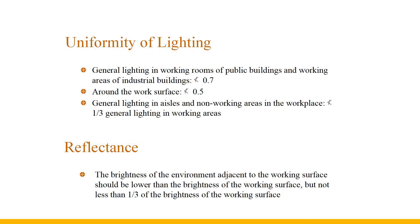Illumination uniformity is equal to the ratio of minimum illuminance to average illuminance. General lighting in working rooms of public buildings and working areas of industrial buildings should not be less than 0.7. The surrounding area of the working surface should not be less than 0.5. The general lighting illuminance value of walkways and non-working areas in the workplace should not be less than one-third of the general lighting illuminance value of the working area. Appropriate reflectance can maintain a certain brightness balance of each surface in the room, making the visual effect comfortable and effective. The brightness of the environment adjacent to the work surface should be lower than that of the work surface, but not less than one-third of the brightness of the work surface.